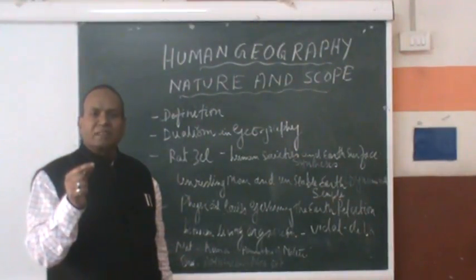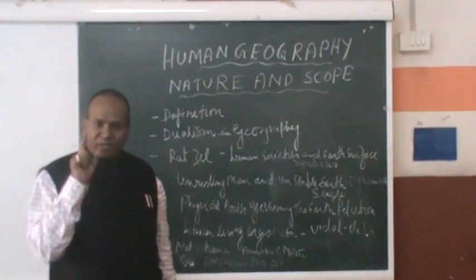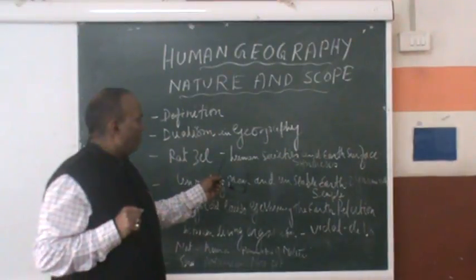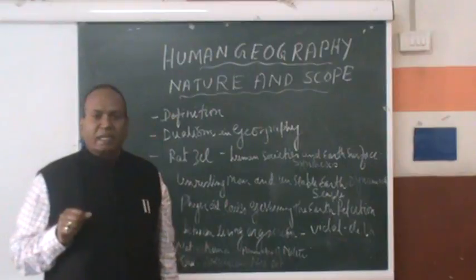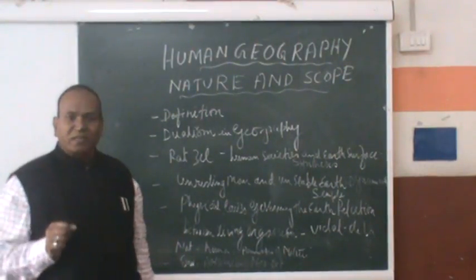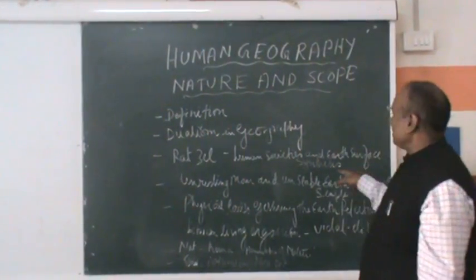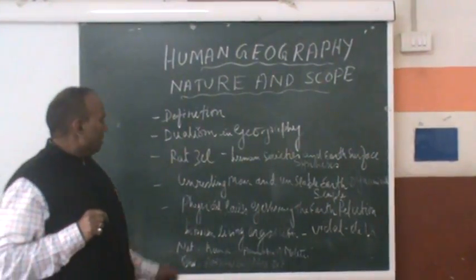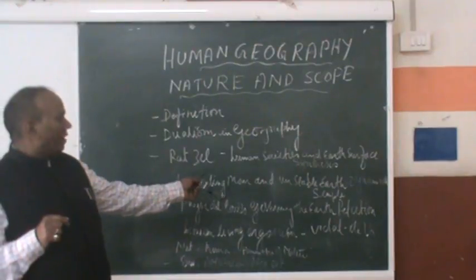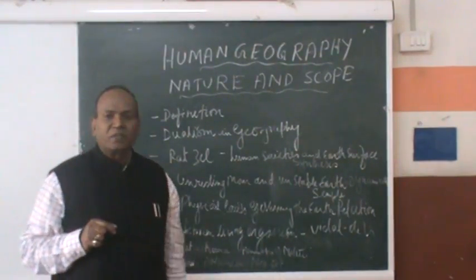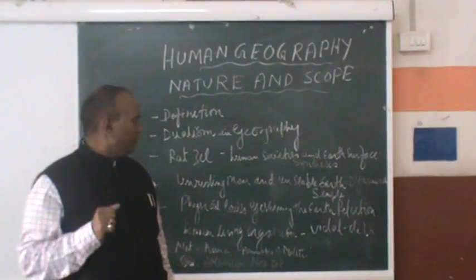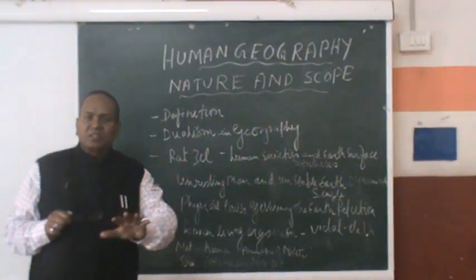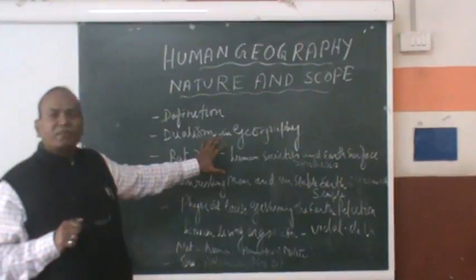Dynamism is the key word in human geography, because geography as a discipline is a dynamic phenomenon — it keeps on changing. We need to study from the perspective that geography as a discipline is dynamic in nature. Ratzel defined human geography as the relationship between human societies and the earth's surface, meaning synthesis is the key word. The last definition is from Paul Vidal de la Blache, who talks about the physical laws governing the earth's surface and how human beings cope with them.